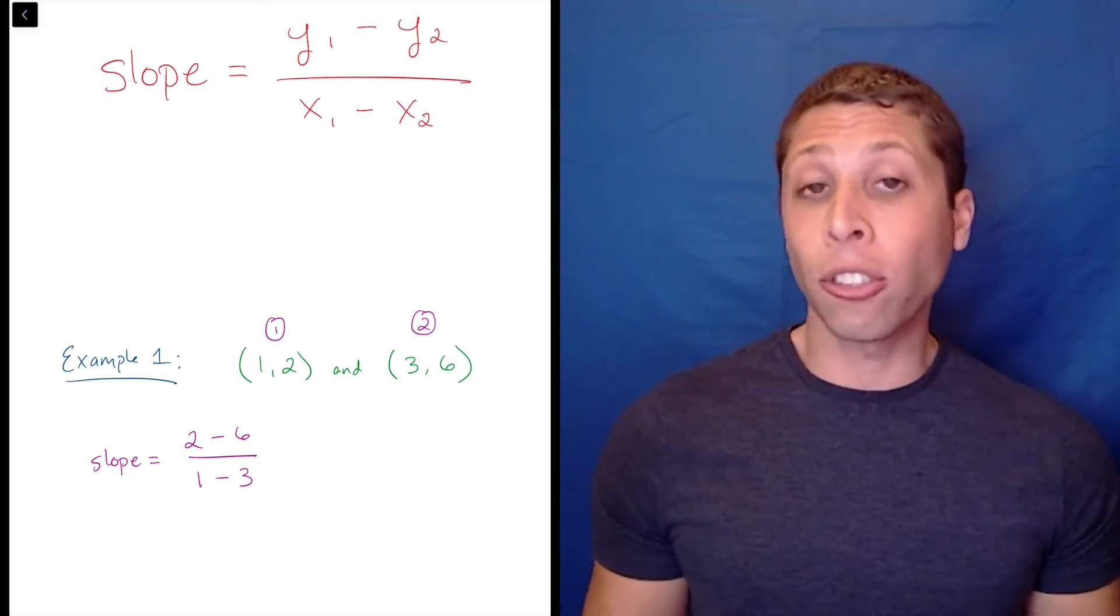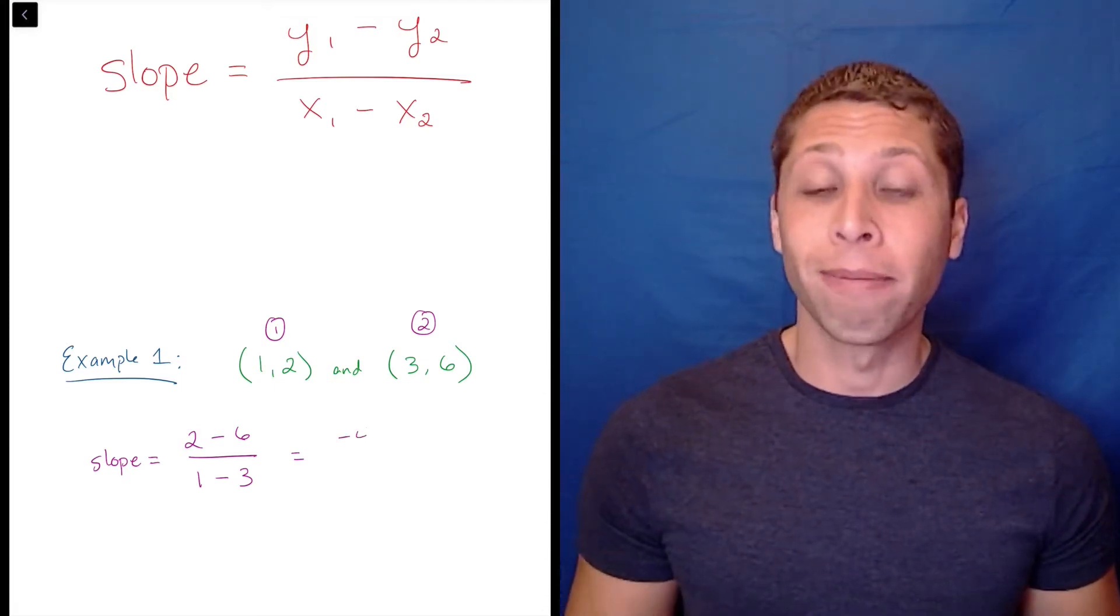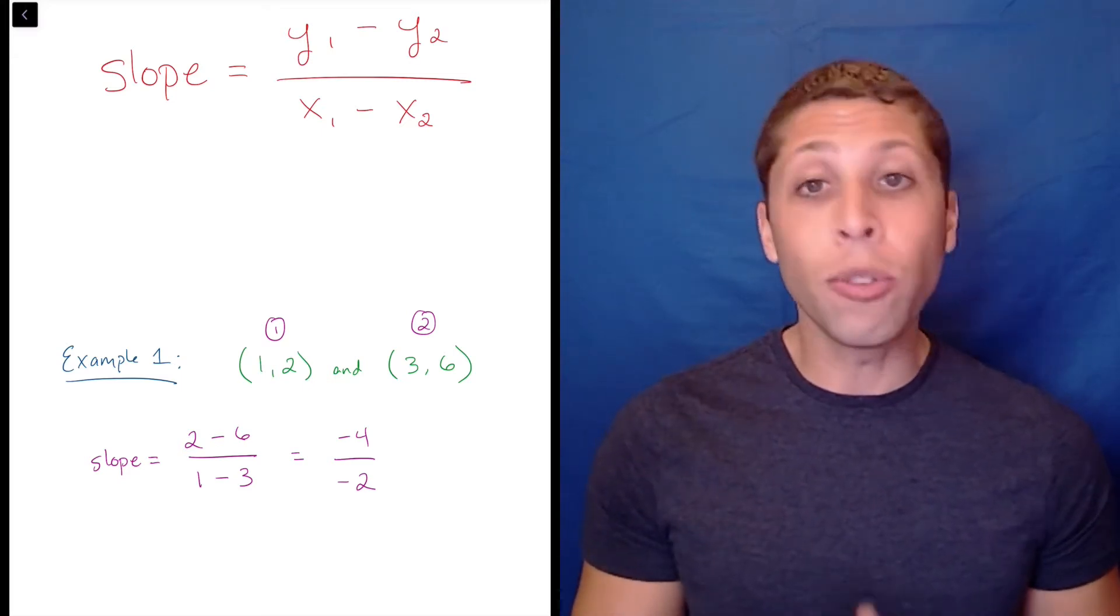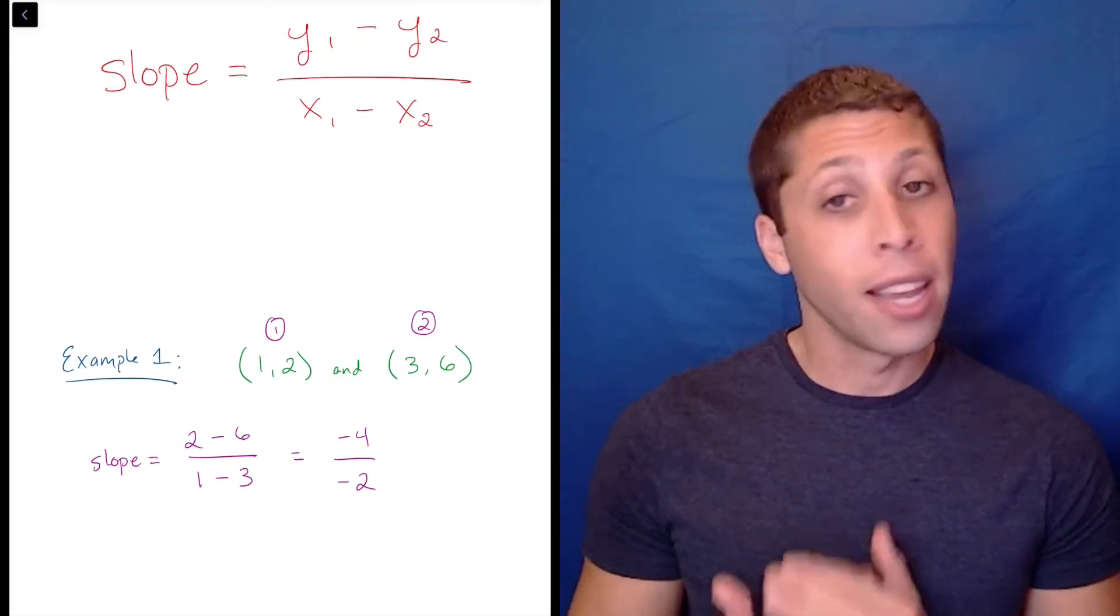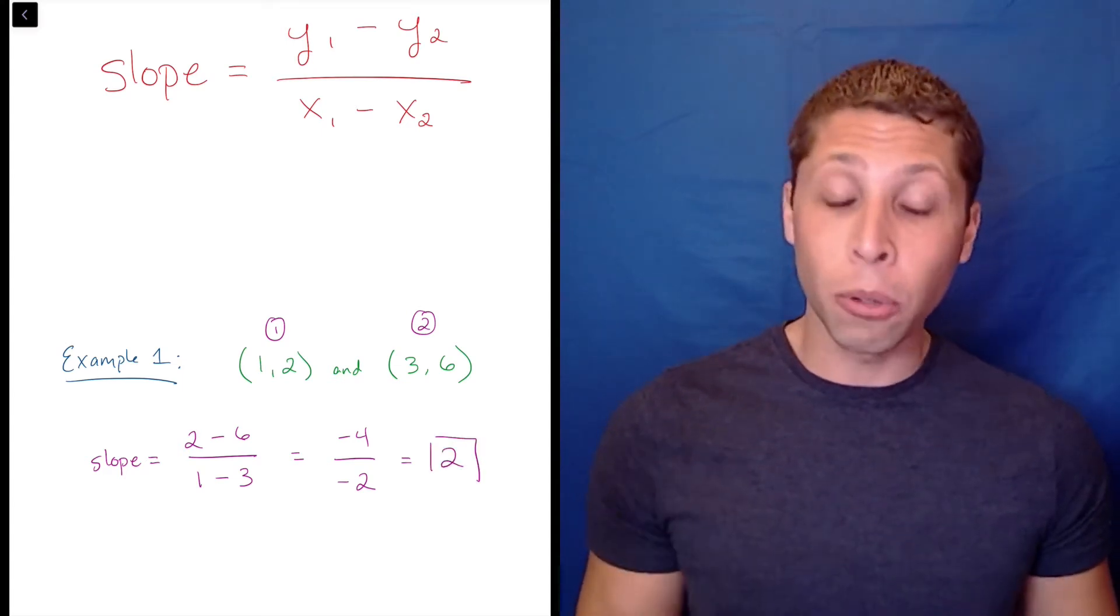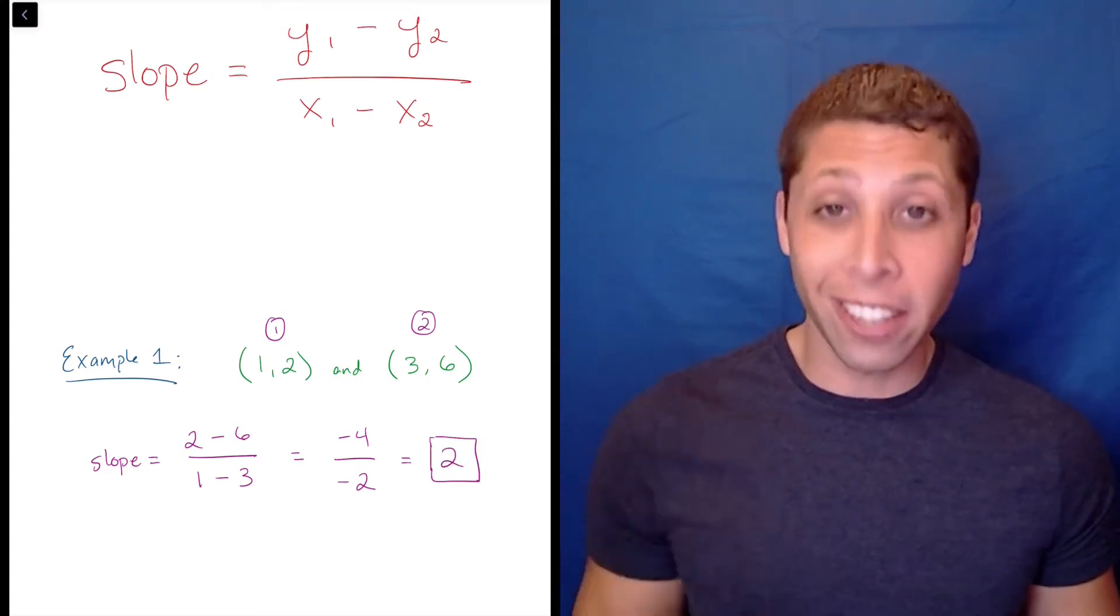The rest is just arithmetic. Start with the subtraction. 2 minus 6 is negative 4, and 1 minus 3 is negative 2. As always, you need to fully reduce your fractions. In this case, negative 4 divided by negative 2 is positive 2, so the slope is 2. We are done.